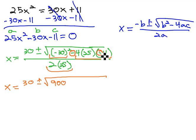Plus 1100, because we have a negative 4 and a negative 11. A negative times a negative is going to be a positive, 1100, all over 2 times 25, or 50.